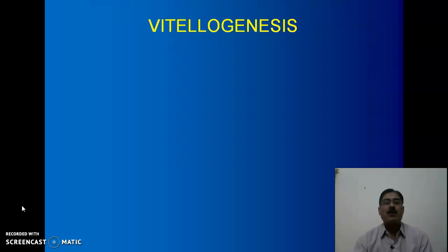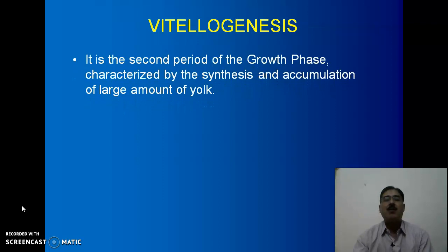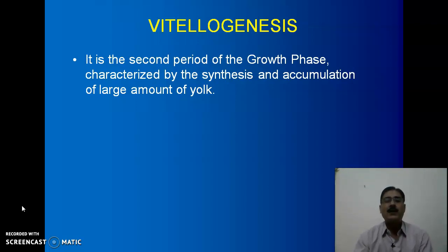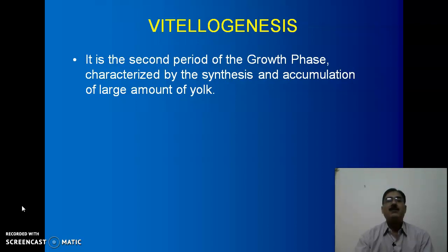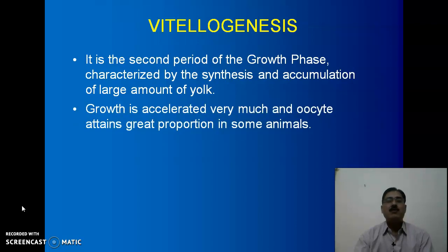Now, what is vitellogenesis? It is the second period of the growth phase, characterized by the synthesis and accumulation of a large amount of yolk. Yolk is a term used not for a specific chemical but for a group of chemicals present in the yolk. It contains proteins, sugars, and other substances. Growth is accelerated very much and the oocyte attains great proportions in some animals, as we have already seen in a previous lecture.